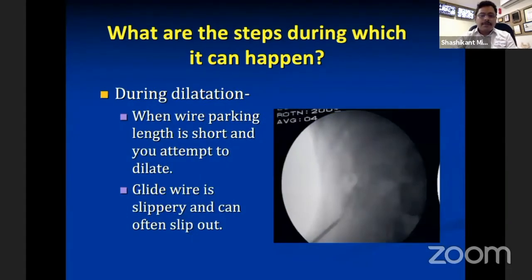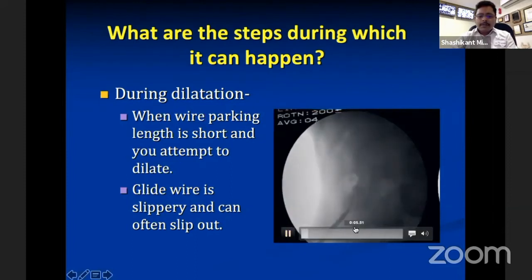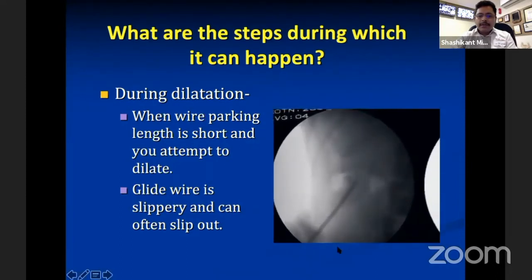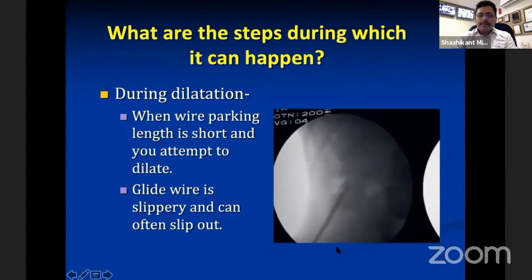There are some systems where wire parking length is short. If you see the system, the wire is parked into the pelvis, and with a short parking length — especially if the wire is slippery, floppy, or hydrophilic — there is a likelihood that the wire may slip during the dilatation process. You need to use a stiffer wire in this scenario.